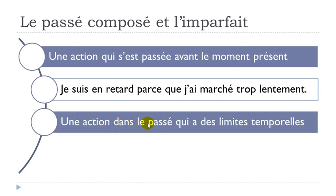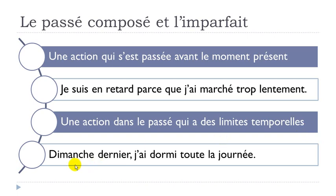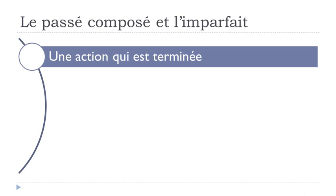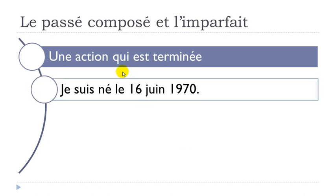Another use is une action dans le passé qui a des limites temporelles — an action in the past with clear time limits. For example: 'Dimanche dernier, j'ai dormi toute la journée.' Dormir means to sleep. J'ai dormi is the passé composé form, and toute la journée — all day long — gives you a clear limit. Also, une action qui est terminée — a finished action — for example: 'Je suis né le 16 juin 1970.' Being born is an action that is clearly finished, so you use the passé composé with the verb naître.